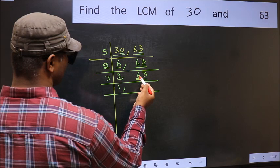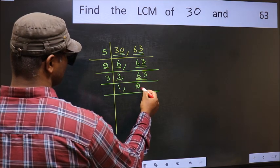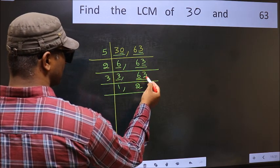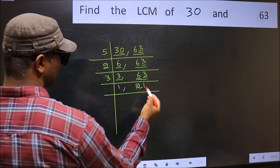First number, 6. When do we get 6 in 3 table? 3, 2, 6. The other number, 3. When do we get 3 in 3 table? 3, 1, 3.